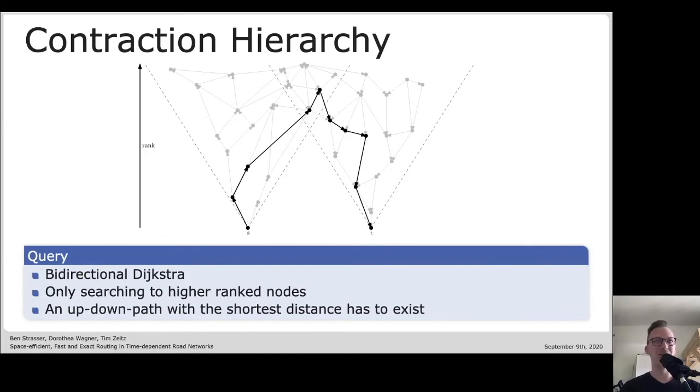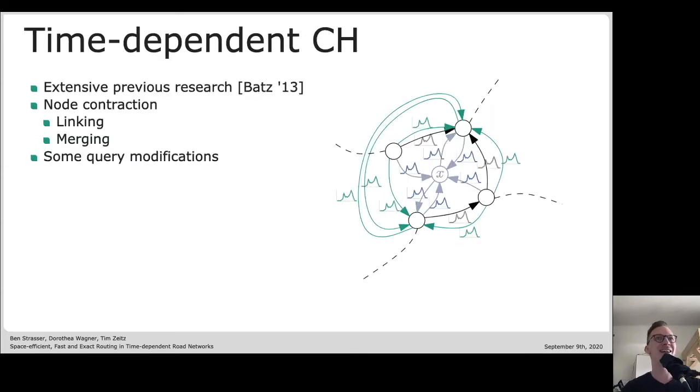So it would be nice if we could apply this contraction hierarchy technique to time dependent road networks. In fact, that has already been done. There has been extensive previous research, and here in this talk I'm going to compare primarily to the works of Gernot Veit Batz, who did his dissertation on the subject and extended contraction hierarchies to the time dependent setting. Conceptually, it's actually not that complicated. All we need to do is handle those functions. Instead of summing up two weights, we need to chain two such functions, which is called linking, and then we get a new function at the shortcut.